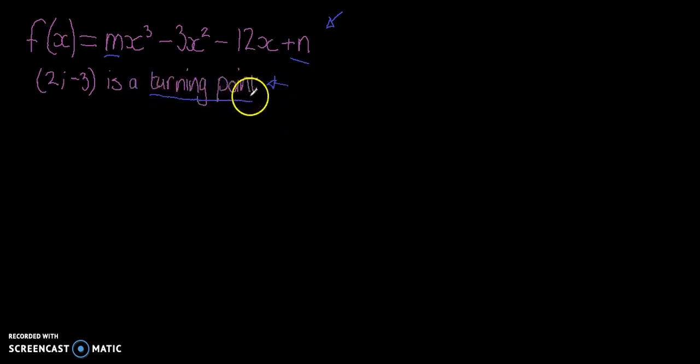Now the fact that they've told us that it's the turning point means we should already be thinking about making the derivative equal to zero, because the turning point, which is also called the stationary point, is where the gradient of the tangent of the line equals zero, and that's because it's parallel to the x-axis.